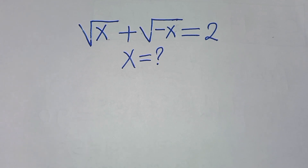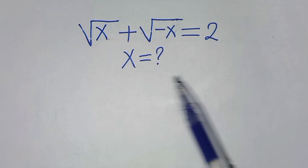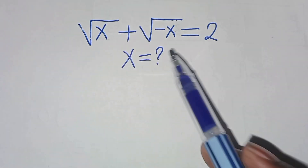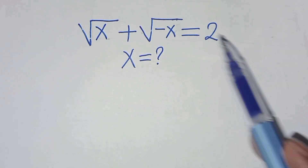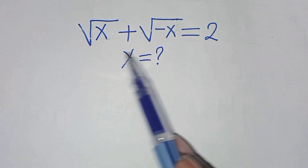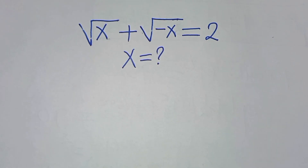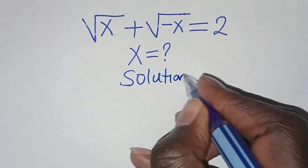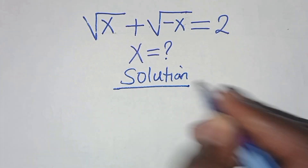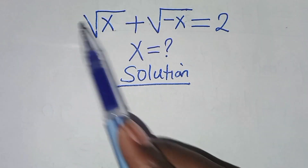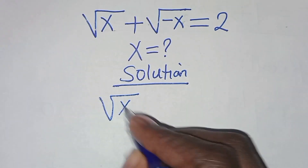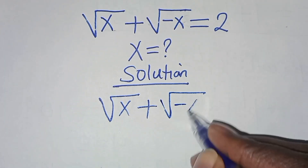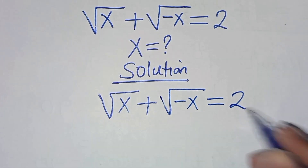Hello everyone, welcome to solve this nice algebra problem: the square root of x plus the square root of minus x is equal to 2. So what is the value of x? Now for the solution, we have square root of x plus square root of minus x equals 2.